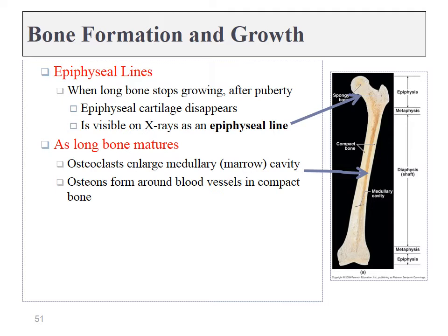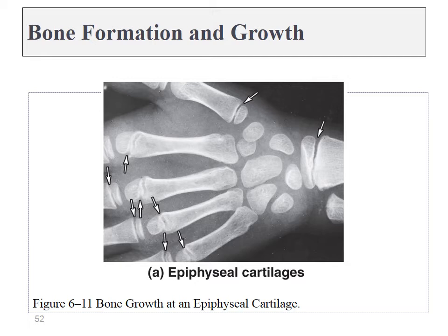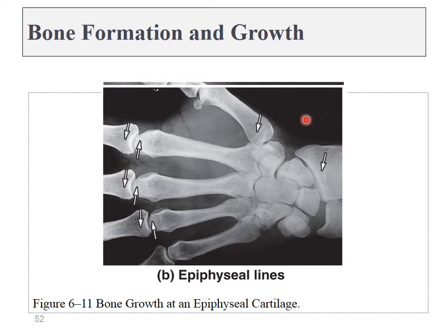Bones continue to grow from the epiphyseal plates until puberty. At this time, the bone tissue outgrows the cartilage tissue and completely replaces it. The epiphyseal plate is now a small line of compact bone known as the epiphyseal line, and the long bones can no longer grow longer. On an x-ray of a young person, the epiphyseal plates appear as apparent gaps where cartilage does not absorb the radiation. Later in life, this cartilage is replaced with compact bone, appearing as radio-opaque lines — the epiphyseal lines.